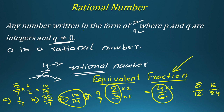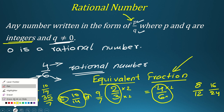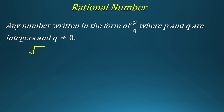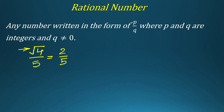Just for revision: a rational number is any number written in the form P over Q, where P and Q are both integers and Q should not be equal to 0. Now, some confusing exam questions: for example, is square root of 4 over 5 a rational number? You might say no because of the square root sign, but square root of 4 simplifies to 2. So it becomes 2 over 5, which satisfies all the conditions — both integers, denominator not zero. It is a rational number.